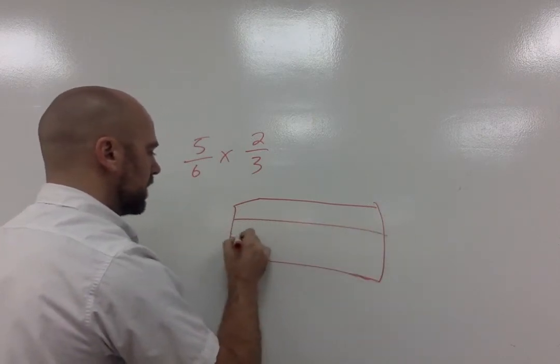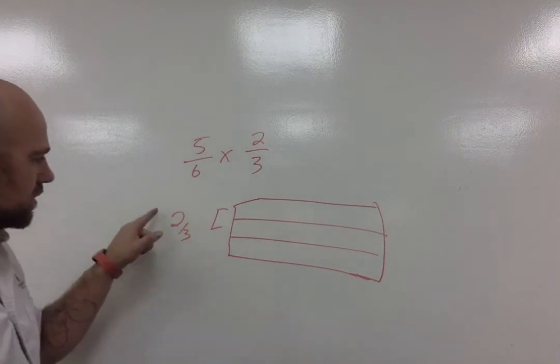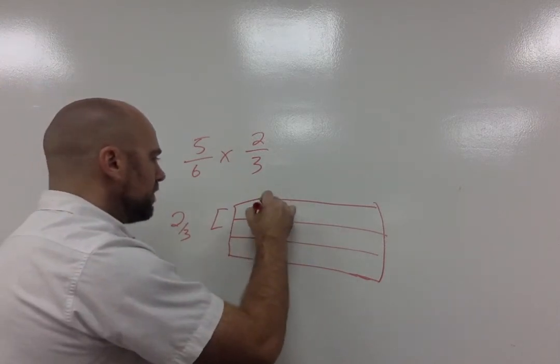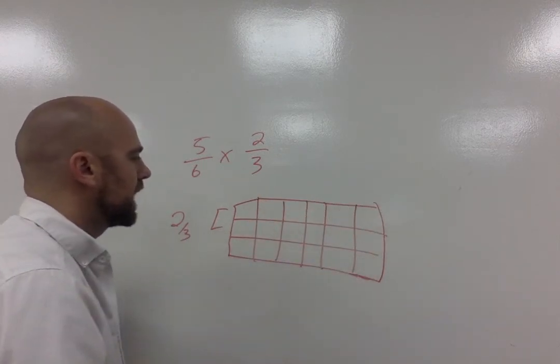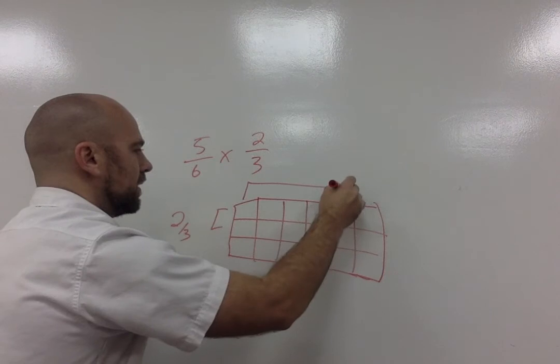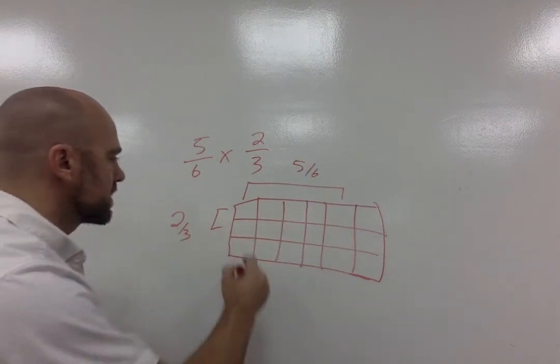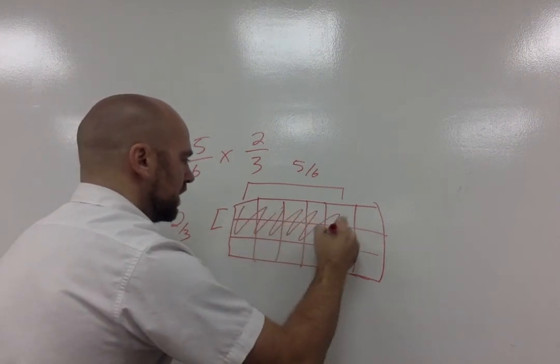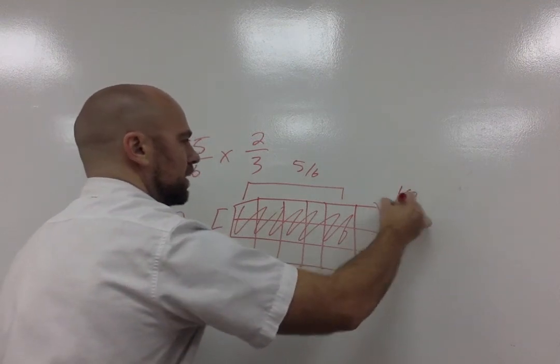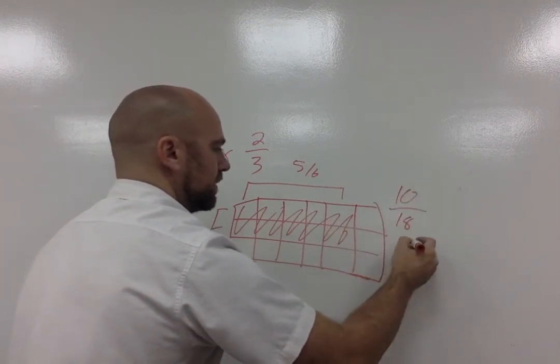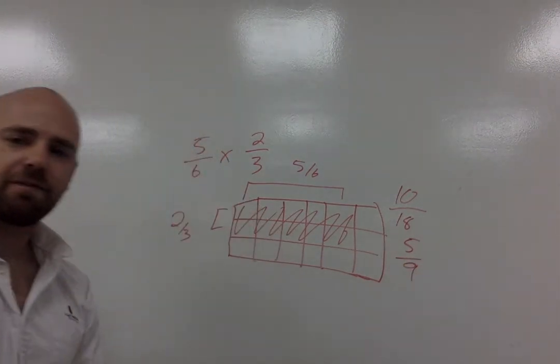This is going to be broken up into three sections. And two of my sections are going to be filled. Two of the three sections are going to be filled. Now I need five of the six. So I have one, two, three, four, five sections. So all of these are going to be filled up, which is going to give me five, ten over a total of eighteen, which is five over nine becomes my final answer.